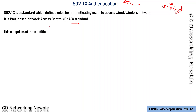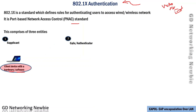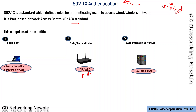802.1x has mainly three entities. The first is the supplicant — a client which wants to access the internet or network resources, and that client will have the required hardware as well as software. The second entity is the authenticator or gate, which can be a switch, an access point, or a wireless LAN controller. The third entity is the authentication server, for example a RADIUS server, which has an associated link to a database where usernames and passwords are saved — such as an Active Directory.